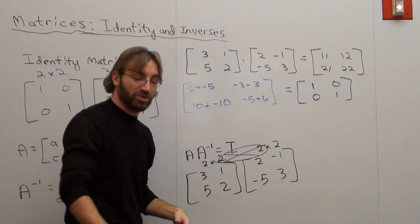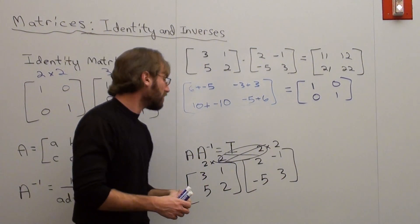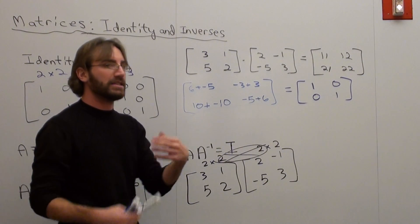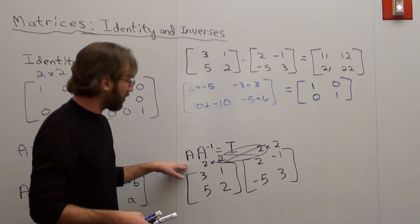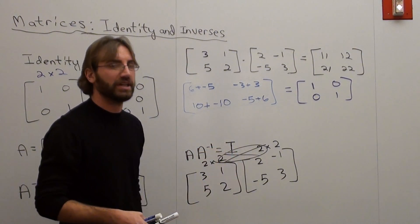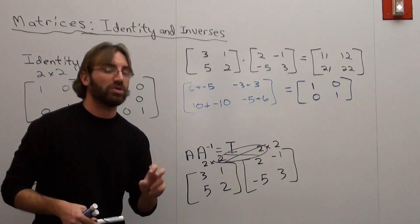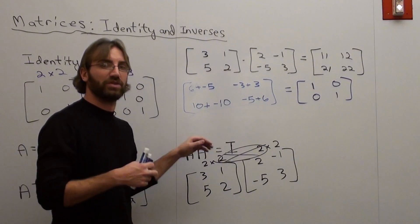And then somebody asked another question, which was actually a very good question. They said, okay, I understand where a matrix times its inverse is the identity. Is it going to work the other way around? Is the inverse times its matrix going to equal the identity? And the answer is yes. If it is its inverse, then it should work both ways. It should be A times the inverse or the inverse times A.